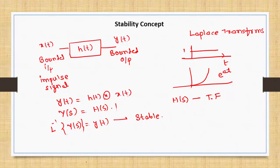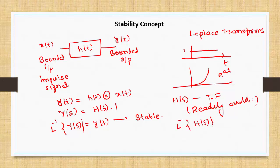The first reason for applying the impulse signal is that the output equals the transfer function of the system, which is readily available. Since it's readily available, I can easily find the inverse Laplace transform of H(s) to determine stability. The inverse Laplace transform of the output is the inverse Laplace transform of the transfer function.